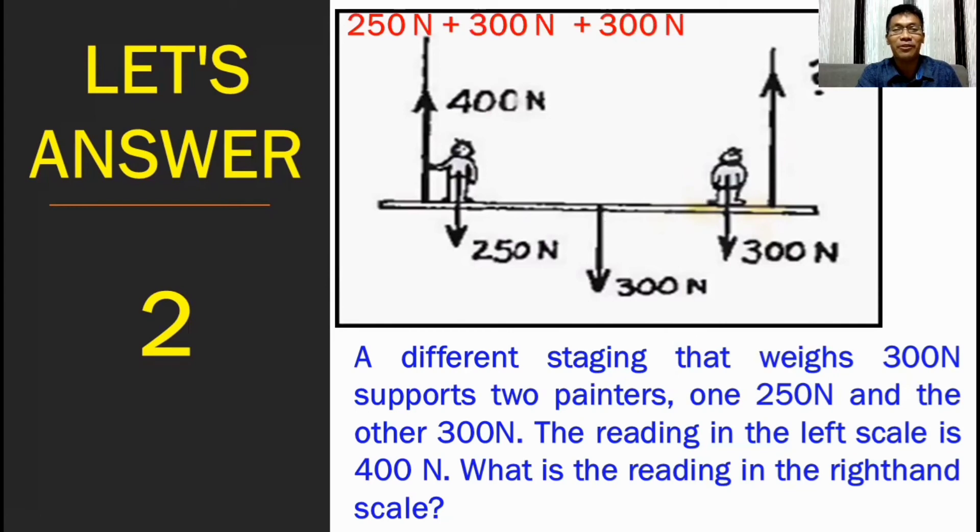With that, we got 250 newton plus 300 newton and another 300 newton. What is the result? You get it right. 850 newton. Therefore, it is the total weight in this scenario. Next step. We will deduct the 400 newtons, which is pointing upward to 850 newton. So, we got 850 newton minus 400 newton is equal to, hmmm, tama ulit, 450 newton.